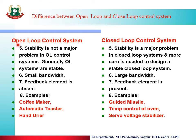Examples of open loop control system are: coffee maker, automatic toaster, and hand dryer. Examples of closed loop control system are: guided missile, temperature controller, oven, and servo voltage stabilizer. We have already seen the examples of hand dryer and servo voltage stabilizer in the previous lectures.